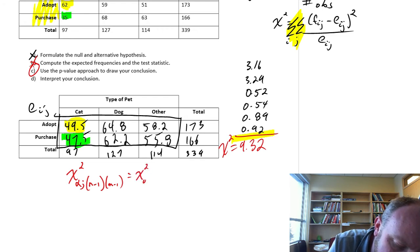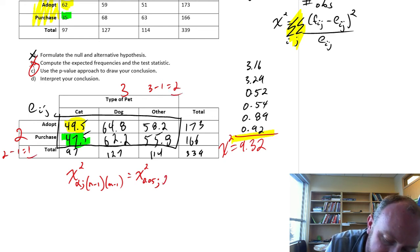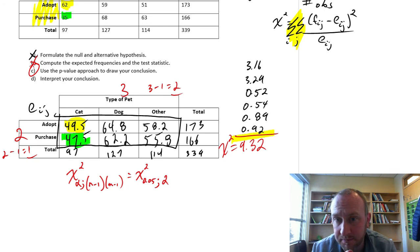For us, we're doing this at the 0.05 level of significance. And we have 2 rows, 3 columns. So 3 minus 1 is 2, 2 minus 1 is 1. So 1 times 2, I have just 2 degrees of freedom.